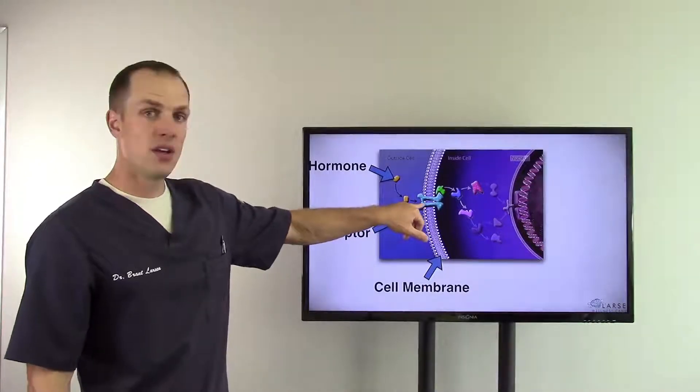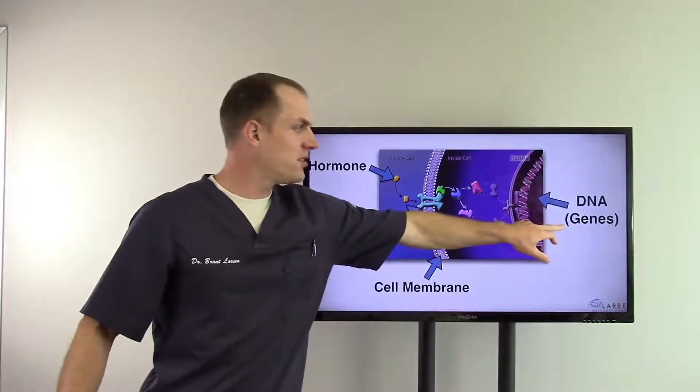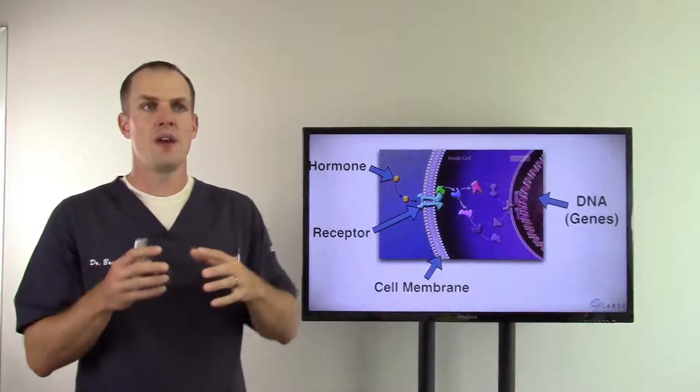Think of your cells as little people, pretty much little yous, because that's what they are. And this is where all life takes place, at this cell membrane. Here's a hormone over here - you can see the hormone is going to bind to this receptor and then tell the cell what to do and get all the way over here to your DNA or your genes.